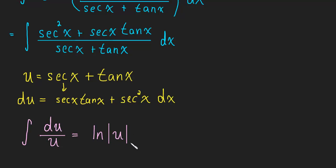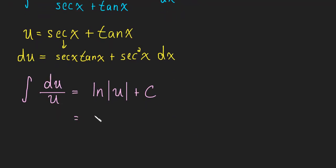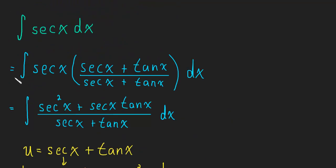So this is the natural log of the absolute value of u plus c. And of course, u is secant tan. So this is the natural log of the absolute value of secant x plus tangent x plus c. Okay, so that's it. That's the integral of secant. So maybe I'll write it up here.